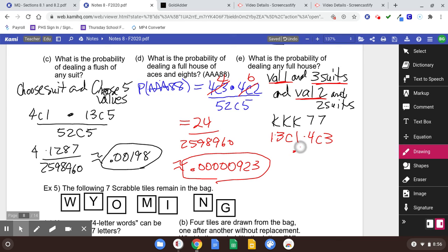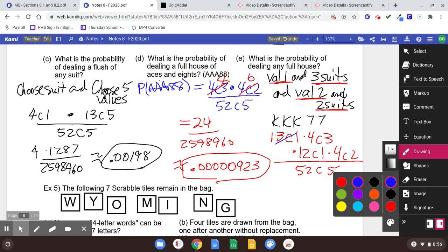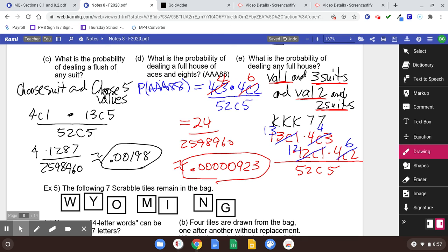You've only got 12 values to pick from, and we're going to choose one. And to get the two suits, you've got four suits and you're going to pick two of them. That's your numerator. Your denominator is still 52 choose 5. It's part over total. So 13 choose 1, anything choose 1 is just going to be that number is 13 and 4 choose 3 is 4 and 12 choose 1 is 12 and 4 choose 2 is 6.